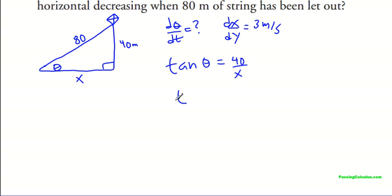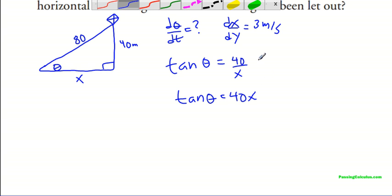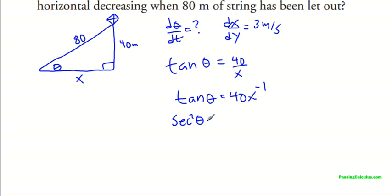So now I'm just going to rewrite this a little bit. Tan θ is equal to 40x to the minus one. And the reason why I do that is because it's easier to differentiate using the power rule. So now we need to really write this part out: d/dt of tan θ equals d/dt of 40x to the minus one.